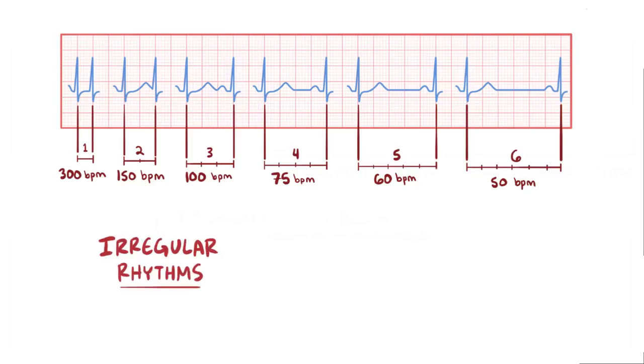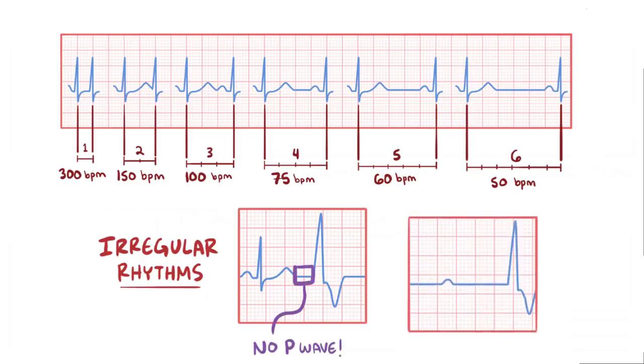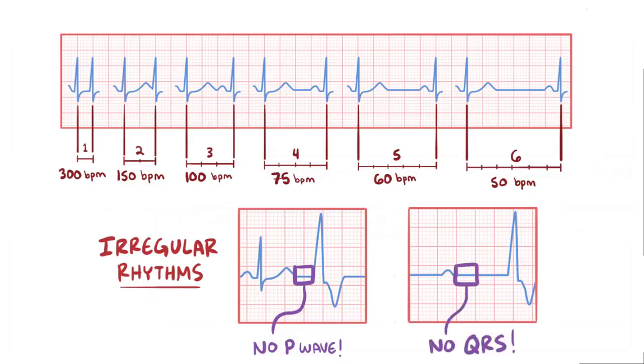To help identify an irregular rhythm, you can look at the morphology or shape of the waveform, and make sure that there's a P wave before every QRS complex, as well as a QRS complex after every P wave.